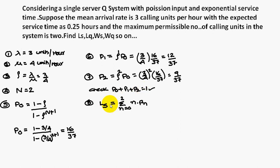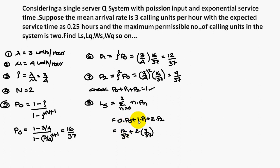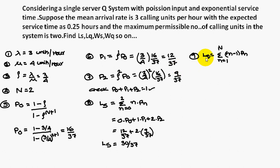The length of the system Ls equals sigma n from 0 to N of n*P(n), which is 0*P(0) + 1*P(1) + 2*P(2). Substituting: 1 times 12/37 plus 2 times 9/37 gives Ls equal to 30/37. Similarly, Lq equals sigma n from 1 to N of (n minus 1)*P(n), which is 0*P(1) plus 1*P(2). Substituting P(2) equal to 9/37 gives Lq equal to 9/37.